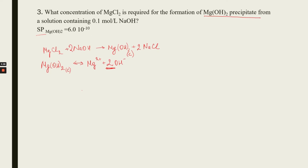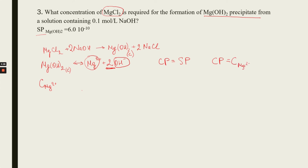We have to find the concentration of magnesium chloride — basically the molar concentration of magnesium needed to form the precipitate. A precipitate is formed when the concentration product equals the solubility product. The concentration product for that salt is written as: molar concentration of Mg²⁺ multiplied by the concentration of OH⁻ ions squared (power 2, because there are two hydroxide ions).